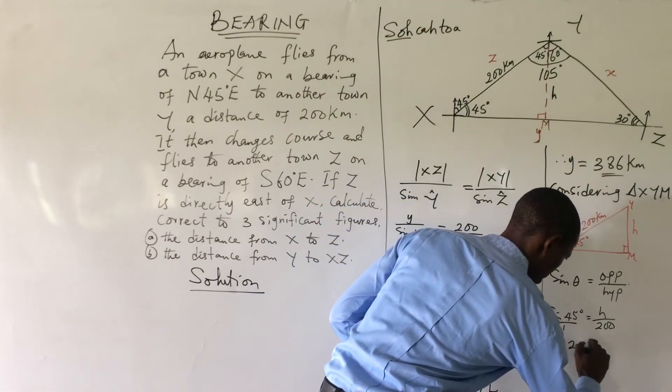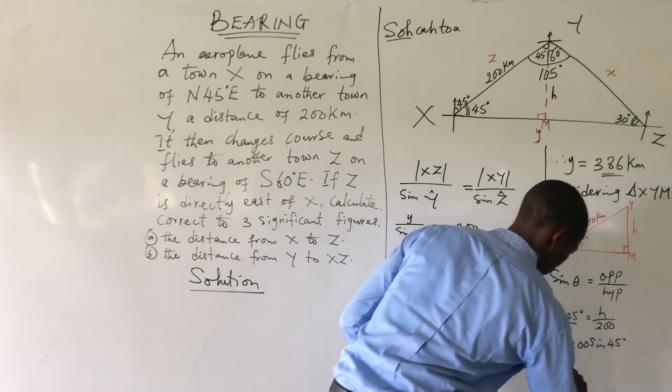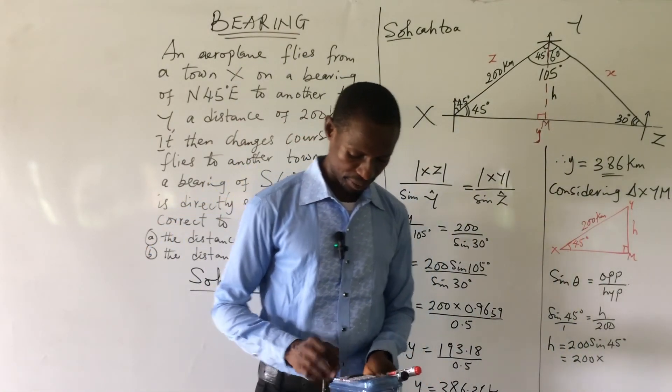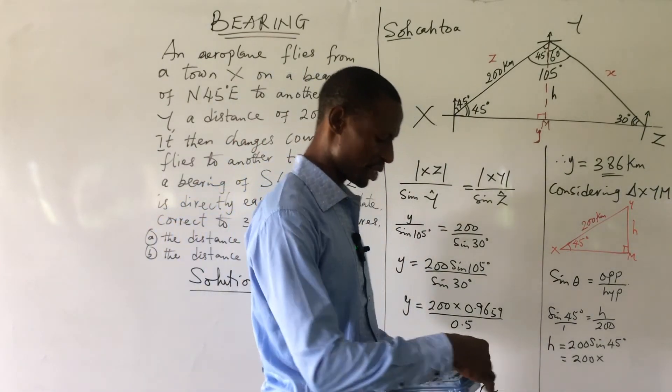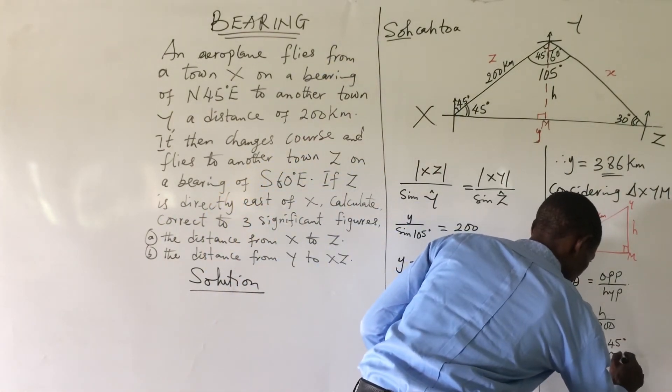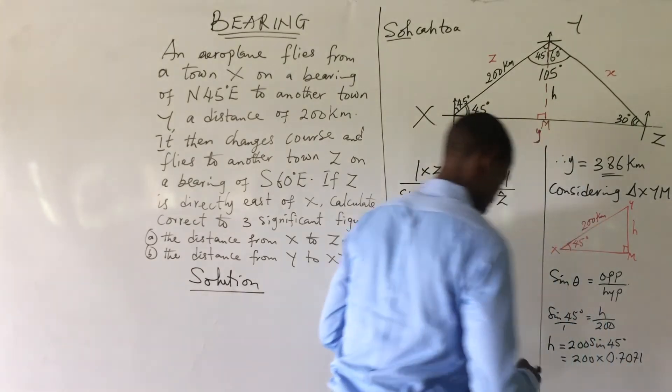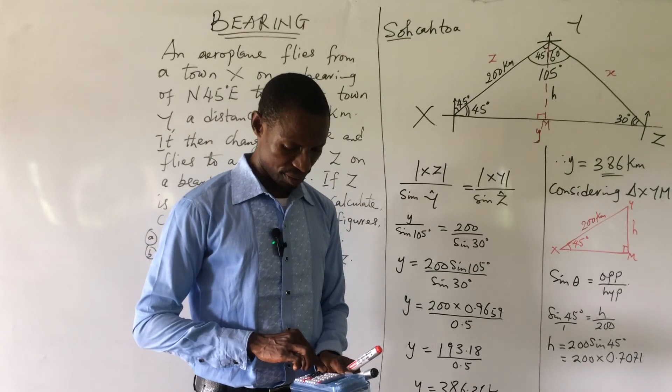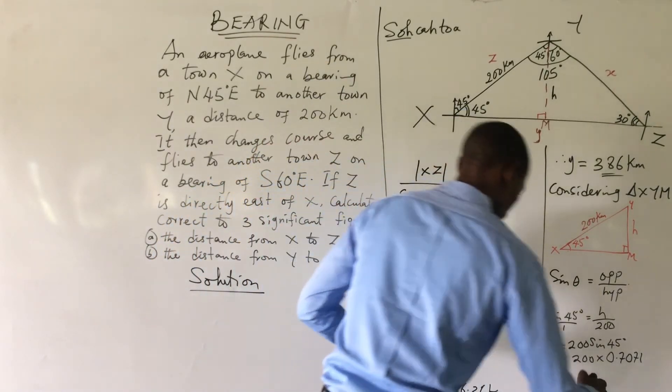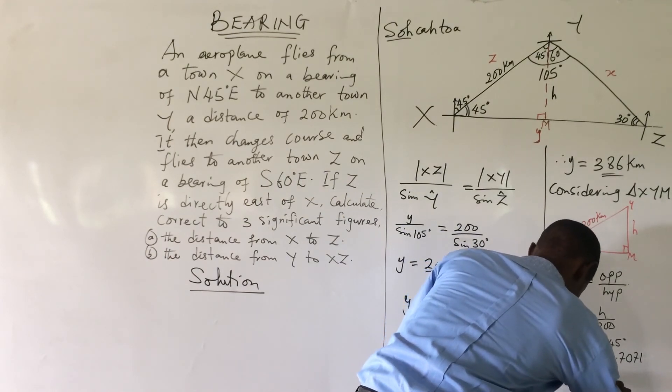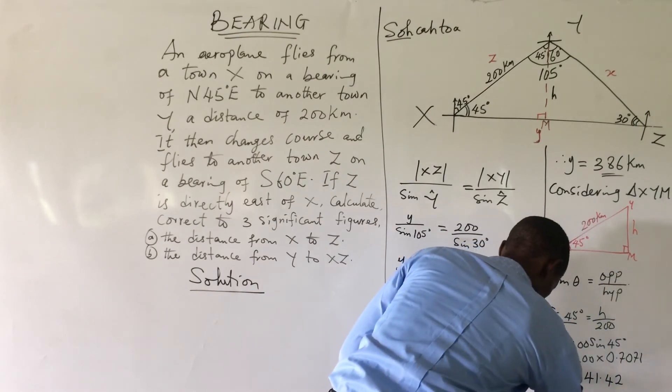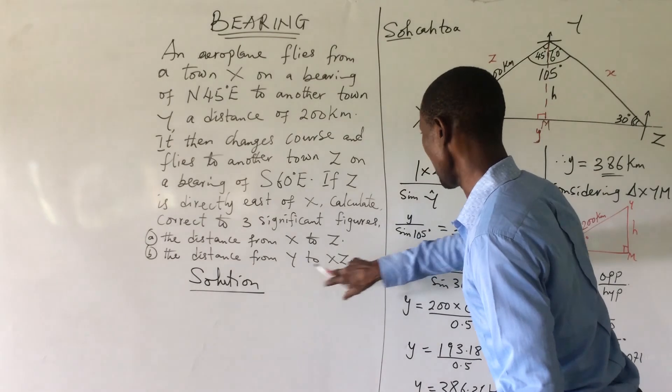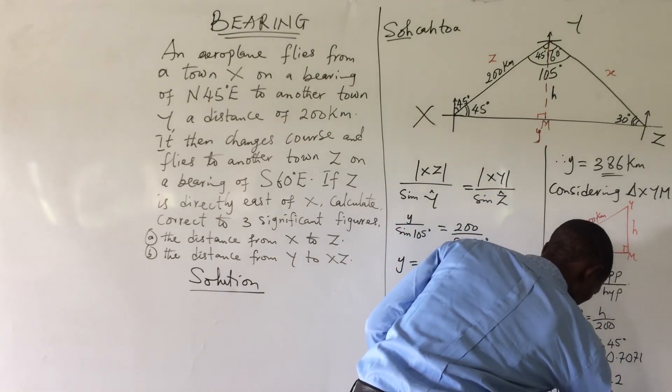From here, if we make h the subject of the formula, h will now be 200 sine 45 degrees. We have this to be 200 times sine 45 degrees, which is 0.7071. We have 200 times 0.7071, that gives us 141.42. This is our h. To three significant figures, therefore h, which is equal to the distance Y to XZ, is 141 kilometers.